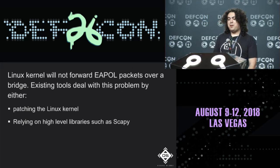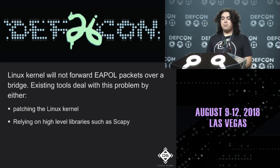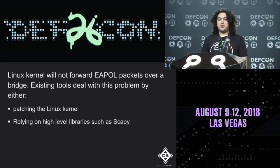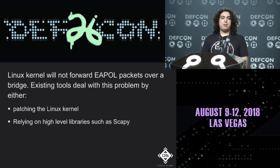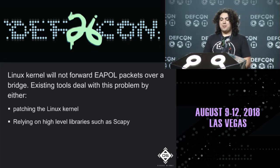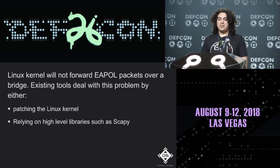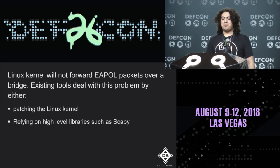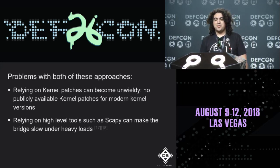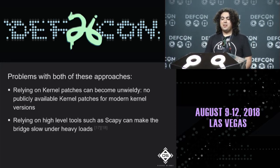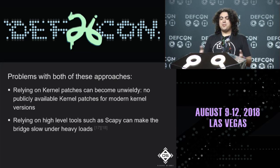We improved upon Duckwall's implementation in two ways. First: back when Duckwall's tool was created, the Linux kernel didn't forward EAPOL packets over bridges — this required kernel patching. There are no longer publicly available kernel patches for modern kernel versions. In 2012, EAPOL bridging was added to the kernel as an optional feature enabled via the sysfs filesystem, so now you can simply change a sysfs file value to enable EAPOL packet forwarding.